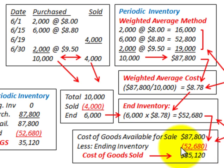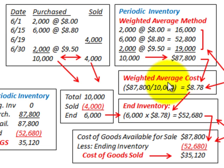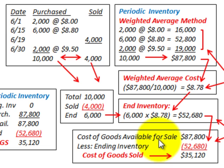In this example, we didn't calculate any revenues for the period based on those sales. We're just using this as an example to show how you'd calculate ending inventory and cost of goods sold based on the weighted average cost method.